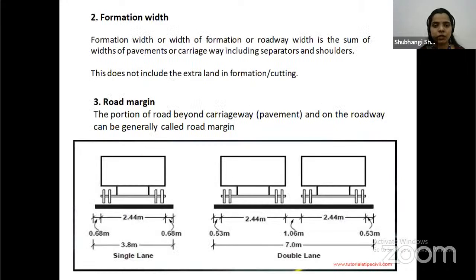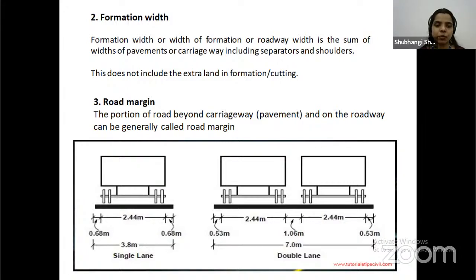Formation width, or width of formation or roadway, is the sum of the width of pavement or carriageway including separators and shoulders. This should not include extra land in formation and cutting. Road margin is the portion of road beyond the carriageway and pavement on the roadway, generally called road margin. For a single lane, its width is 3.8 meters (2.44 meters plus 0.6 meters on its sides).